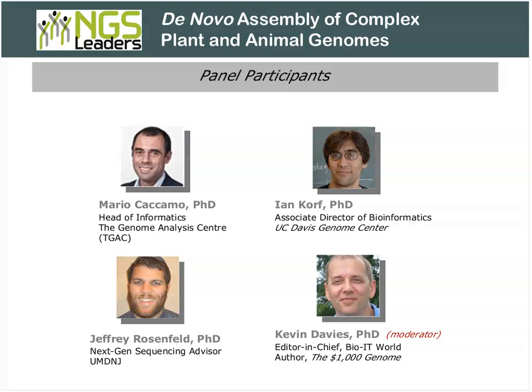Audience member Aris asks: which software do you recommend for large contig alignment — meaning more than a megabase and more than 1,000 contigs? Ian recommends MAUVE — M-A-U-V-E — developed by Aaron Darling to compare genomes to one another, and those genomes can be collections of contigs. Mario also recommends BLAT, which tends to work very well for large alignment. You need to understand how to set your different parameters, but it tends to work really well.